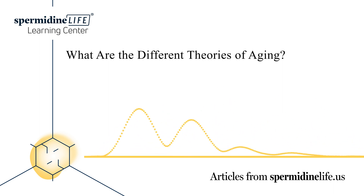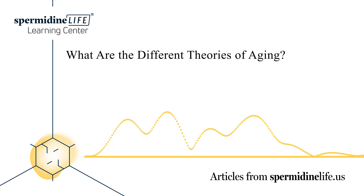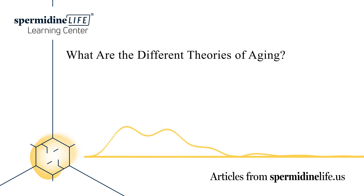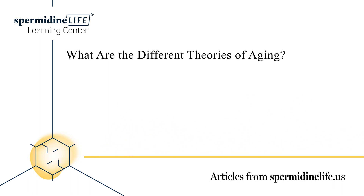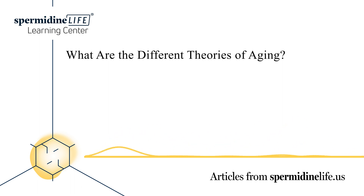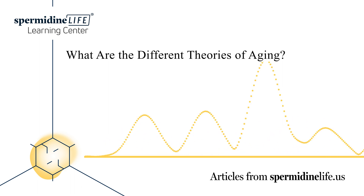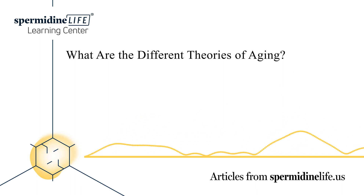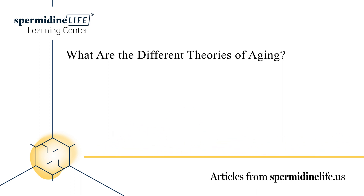The evolutionary theory focuses greatly on the idea that organisms reproduce more than necessary to anticipate that not every offspring will survive. If one offspring survives, they inherently pass this survival instinct down to their offspring, who pass it to theirs. Attempting to answer life's puzzling questions, though fascinating to learn about, often requires ongoing research.